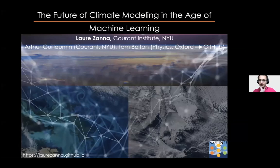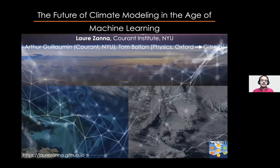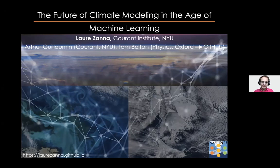Our speaker this week is Laura Zanna. Laura is a professor of mathematics and atmosphere and ocean science at the Courant Institute at NYU. Before moving to New York in 2020, she held positions at Princeton University as well as here in Oxford, where she spent an entire decade. In her work, Laura studies the physics of the Earth's oceans and how they impact our climate. In her talk today, she will outline how machine learning can be useful as a tool not only to understand these processes better, but also how to use that knowledge to improve our climate simulations. Laura, please take it away.